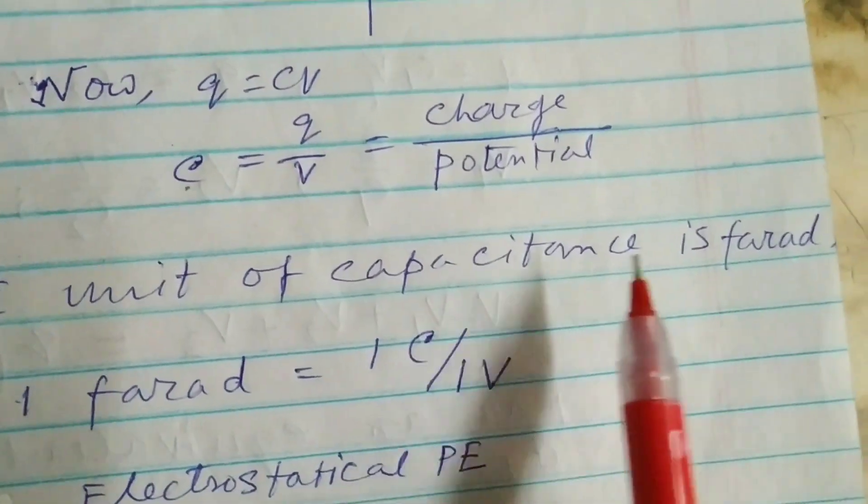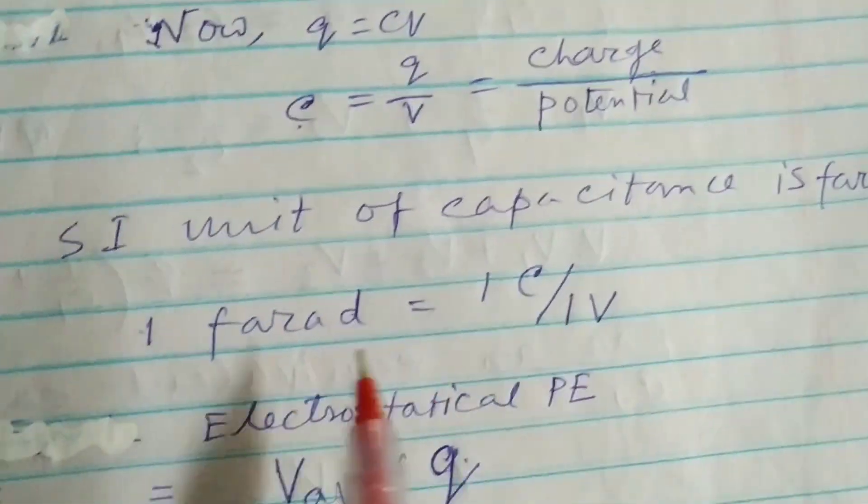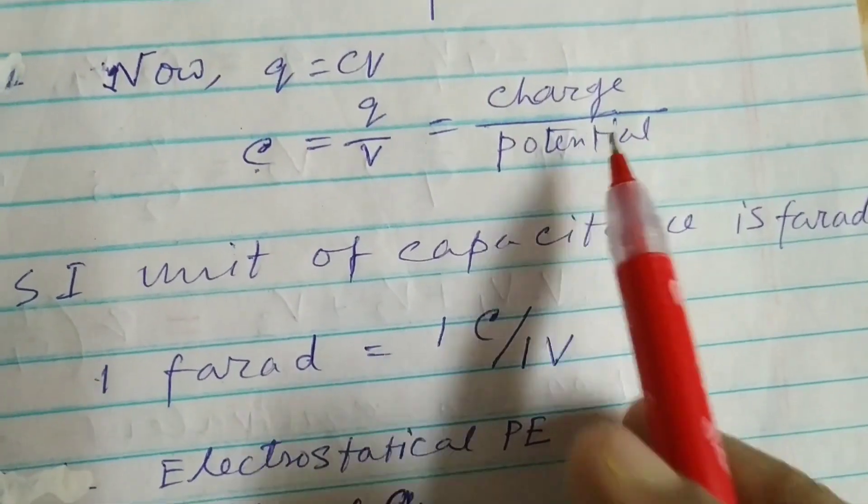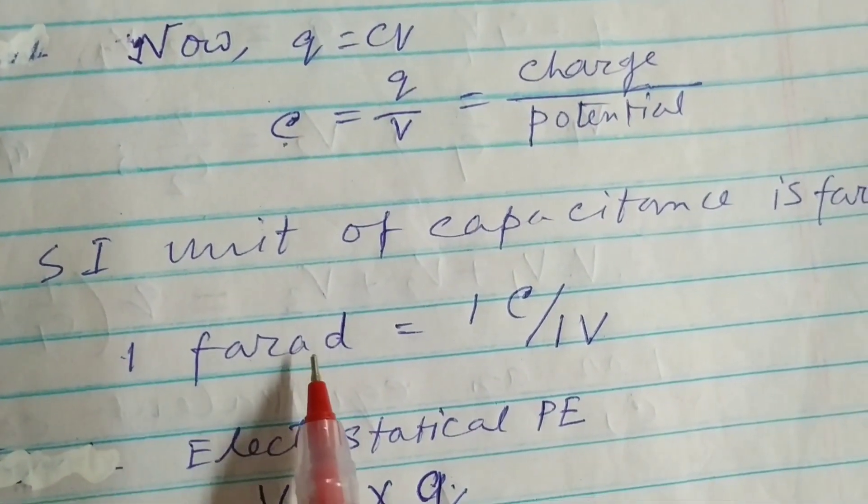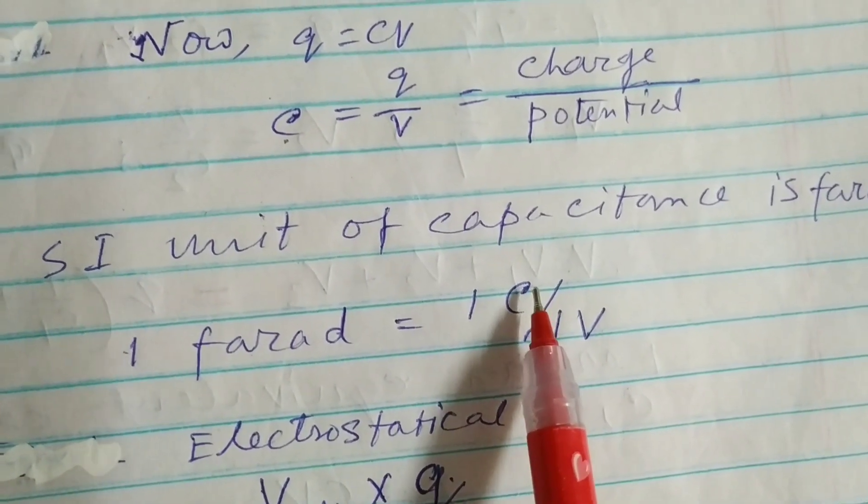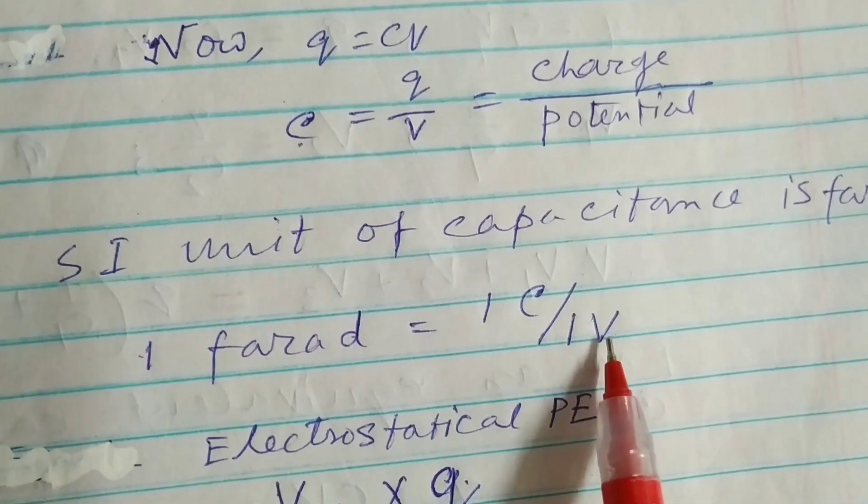SI unit of capacitance is farad. One farad is that capacitance where one coulomb charge will be stored under one volt.